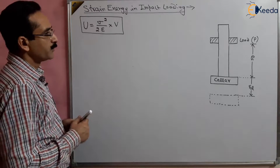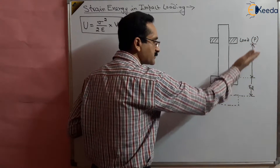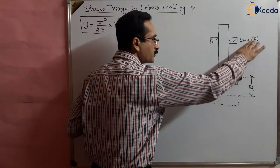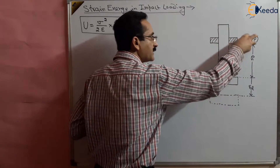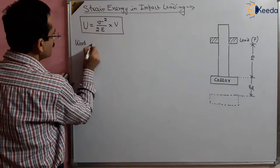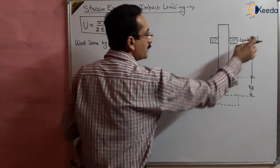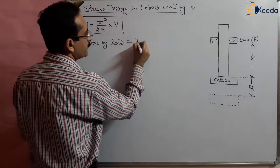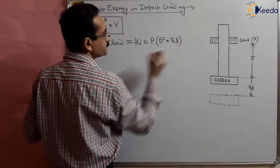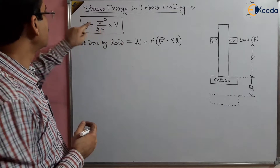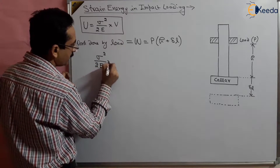What is the stress? This load P falls on the collar from height h and also deflects through a height delta L. So the total height through which the load falls is h plus delta L. The work done by load P will be equal to load multiplied by the distance, so that will be equal to P multiplied by (h plus delta L). This work done will be stored in the material in terms of strain energy.